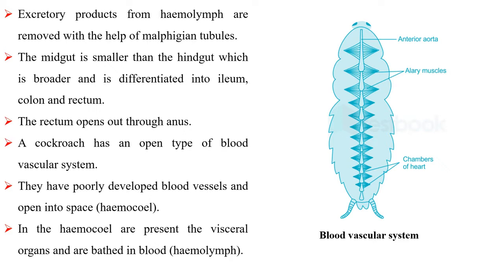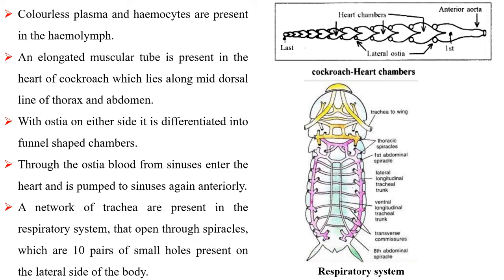A cockroach has an open type of blood vascular system. They have poorly developed blood vessels that open into space. In the haemocele are present the visceral organs and they are bathed in blood. Colorless plasma and haemocytes are present in the haemolymph. An elongated muscular tube is present in the heart of cockroach, which lies along the mid-dorsal line of thorax and abdomen. With ostia on either side, it is differentiated into funnel-shaped chambers.